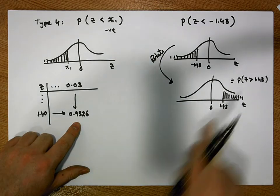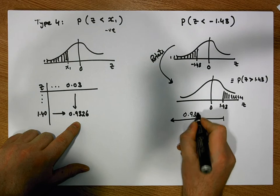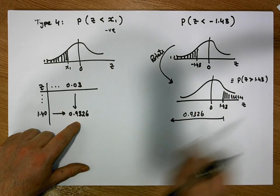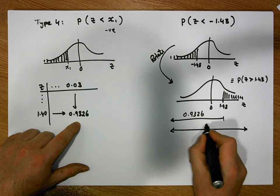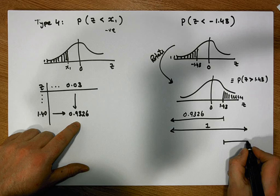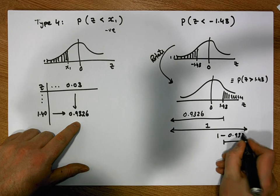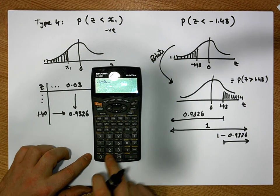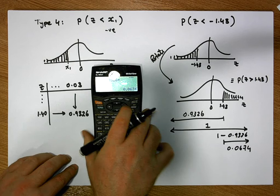So what does that mean with respect to 1.43? It means the area to the left-hand side of 1.43 is 0.9326. Another characteristic of the standard normal distribution is that the total area under the curve equals one unit — the area out to positive infinity and to negative infinity is one unit. So if we take the shorter area away from the longer, we get the area in the right-hand tail: 1 minus 0.9326 gives us a value of 0.0674.